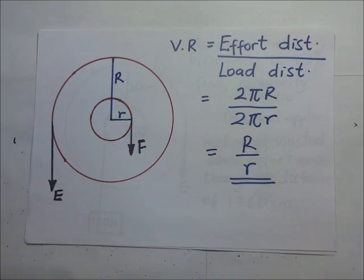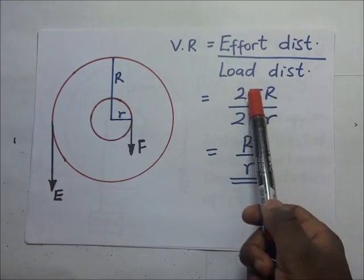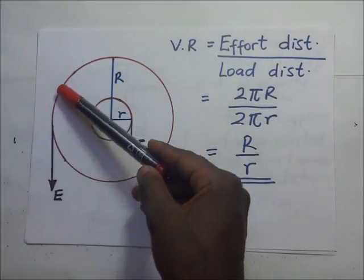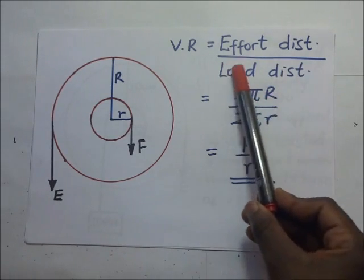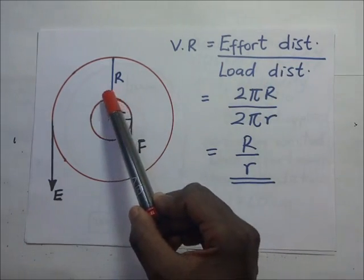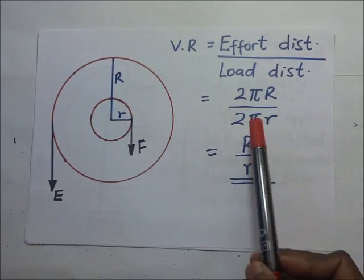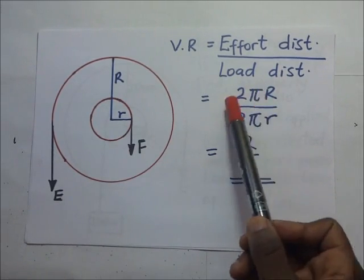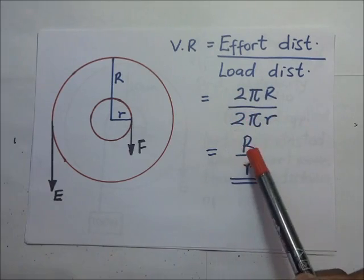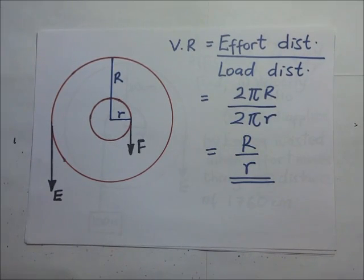That brings us to how we derive the velocity ratio. The velocity ratio equals the effort distance, which is the circumference of the big circle, 2πR, divided by the load distance, which is the circumference of the small circle, 2πr. The 2π constants cancel out, leaving us with capital R over small r. This is the formula for the velocity ratio of the wheel and axle.